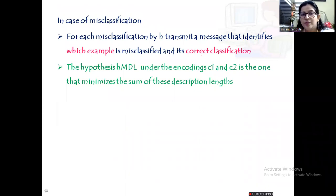The hypothesis hMDL—hypothesis of the minimum description length principle under the encodings C1 and C2—is the one that minimizes the sum of these description lengths C1 and C2.